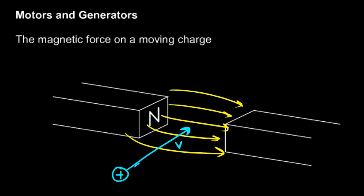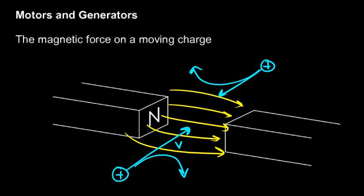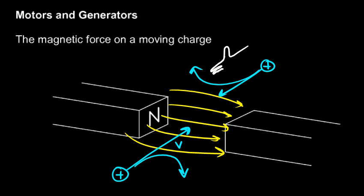So this charge actually moves in a path like that. Now if you picture a charge coming back here, moving across the field in the opposite direction, it's going to be forced the opposite way — it's going to get forced up like that. You can picture your right hand here.